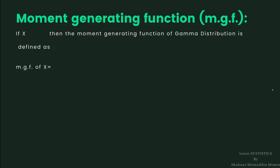Moment generating function is abbreviated as MGF. If x follows gamma distribution with parameters theta and n, where theta and n are the parameters of the gamma distribution, then the MGF of the gamma distribution is defined as MGF of x, which is equal to M_x(t).